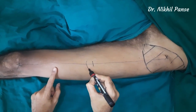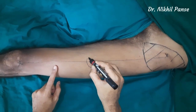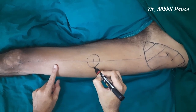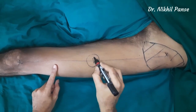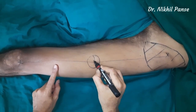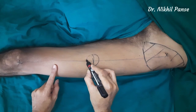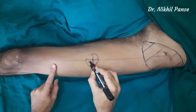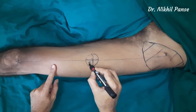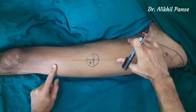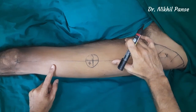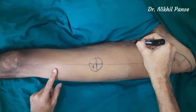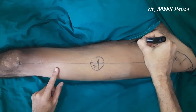A circle with a radius of three centimeters is drawn around this midpoint. It has most commonly been seen that the perforator lies in the inferolateral quadrant of this circle. We then mark the femoral artery.